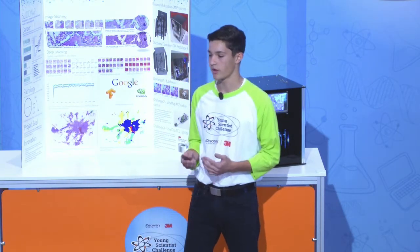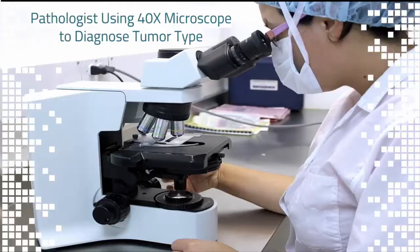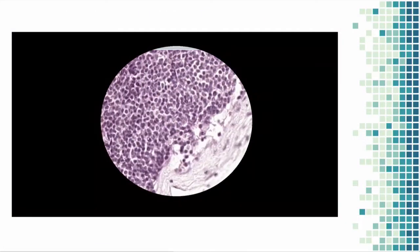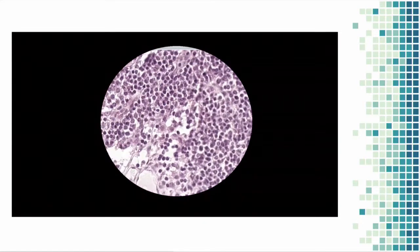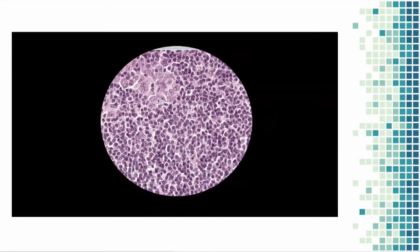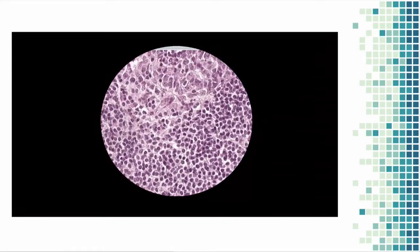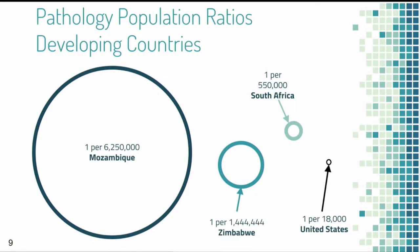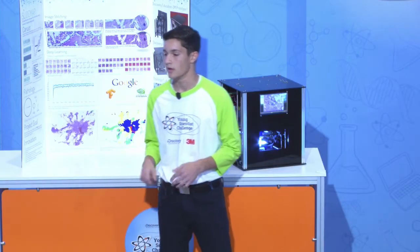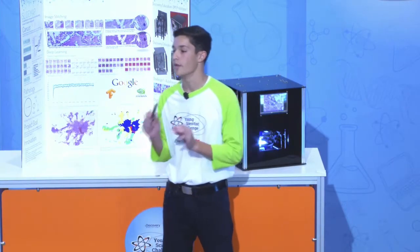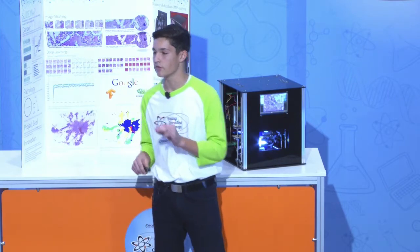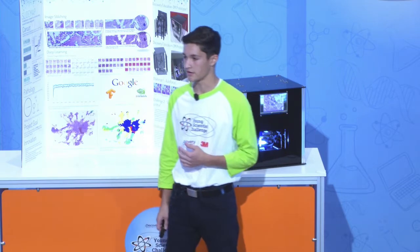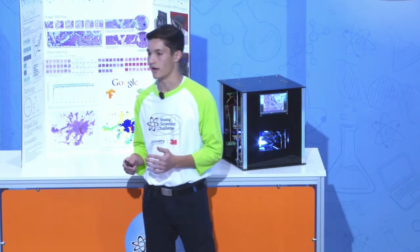In cancer diagnosis, histopathology under a 40x microscope is a critical part. This is an example of what a pathologist would see when viewing a tumor under a microscope. In the United States, there's one pathologist for 18,000 people. In Mozambique, there's one for 6.25 million. These ratios could be clear drivers of differences in five-year survival rates by country. The demand for biomarker tests, as well as the amount of cancer patients, is on the rise.